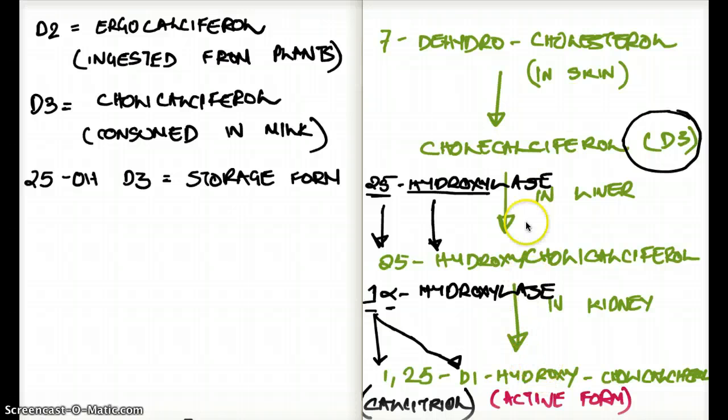That was how we make it in our body, from our skin to the liver to the kidney. But what about ingestion? If we ingest it from plants, the vitamin D from the source of plants is called D2, argocalciferol. When we ingest it from milk, that is in the form of cholecalciferol or D3. The storage form is usually 25-hydroxy-D3.